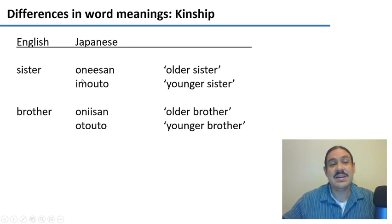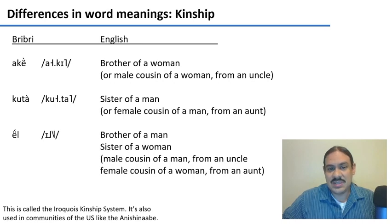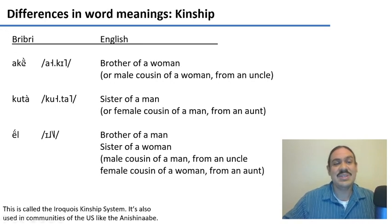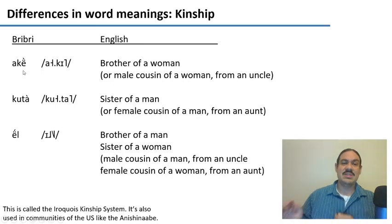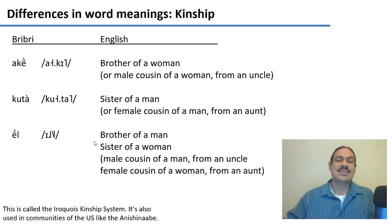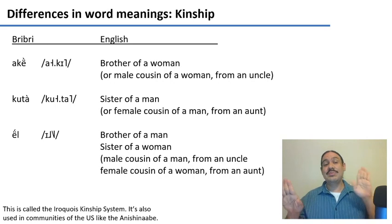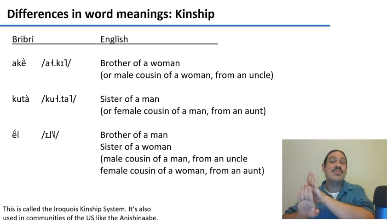In Japanese, 'onee-san' and 'onii-san' are the older ones, and 'imouto' and 'otouto' are the younger ones. There can be systems that are more complex. For example, there are many languages in the U.S. that use a kinship system called the Iroquois kinship system, used in Anishinaabe communities like Ojibwe, and also in the Bribri language. In Bribri, 'aki' is the brother of a woman, 'kuta' is the sister of a man, and 'ir' is the brother of a man and the sister of a woman. So two people called by different words in English share the same word in Bribri.